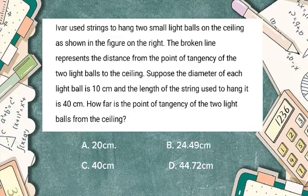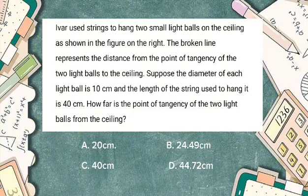Question number 2. Ivar used strings to hang two small light bulbs on the ceiling as shown in the figure. The broken line represents the distance from the point of tangency of the two light bulbs to the ceiling. Suppose the diameter of each light bulb is 10 cm and the length of the string used to hang it is 40 cm. How far is the point of tangency of the two light bulbs from the ceiling?